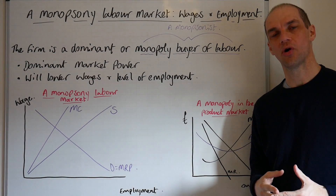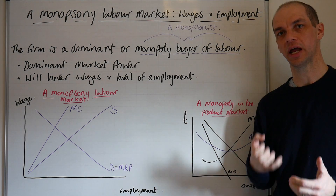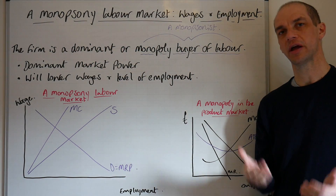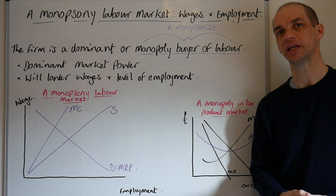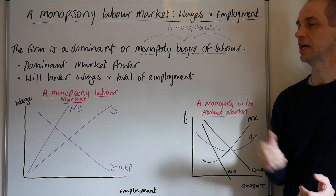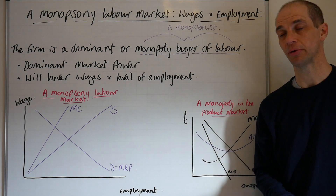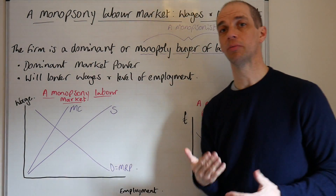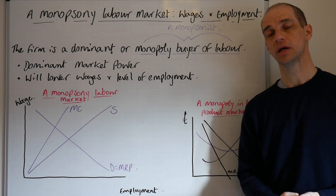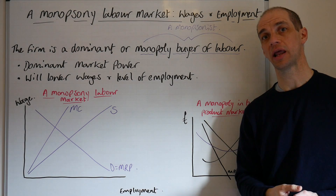Let's now focus on a monopsonist labour market. Here we're dealing with a sole buyer of labour in a given market, so the firm is a dominant or monopoly buyer of labour. They are known as monopsonists or monopsonies. Don't confuse them with monopolies — a monopsonist simply refers to someone who is a sole buyer of, in this case, labour. These firms will have dominant labour market power; they're usually oligopolies or monopolies, and they may have regional, local, or even national market power when it comes to the labour market.